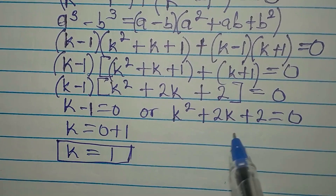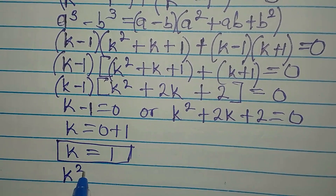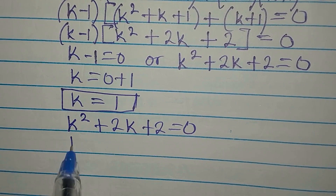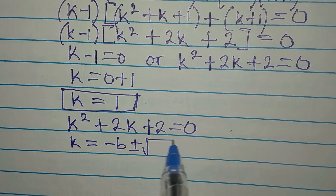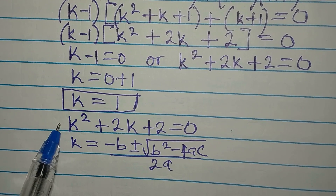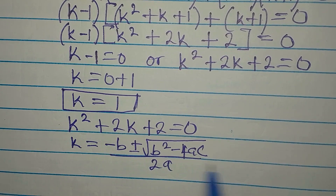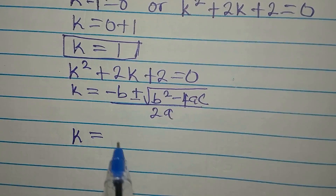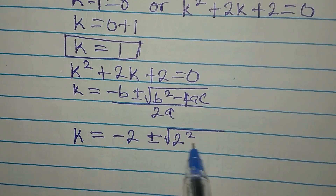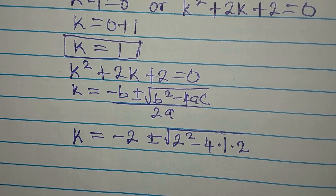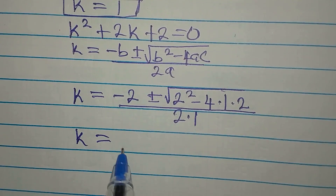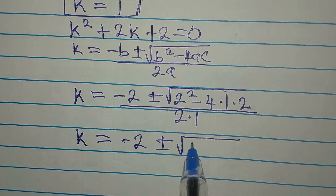To get the other solutions, we take k² + 2k + 2 = 0. The quadratic general formula is k = (−b ± √(b² − 4ac)) / 2a. Here a = 1, b = 2, c = 2. Substituting: k = (−2 ± √(2² − 4·1·2)) / (2·1) = (−2 ± √(4 − 8)) / 2.